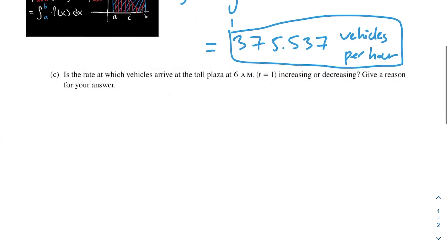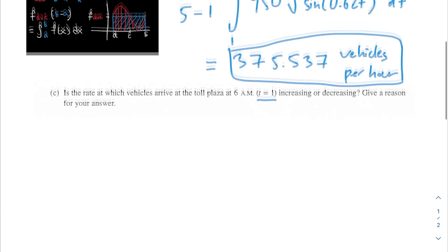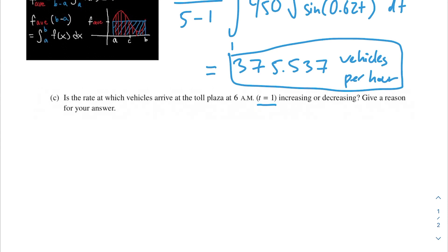Next question: Is the rate at which vehicles arrive at the toll plaza at 6 a.m. (t equals 1) increasing or decreasing? Give a reason for your answer. Now we're actually looking at the rate of the rate, so we're actually going to be finding the derivative of our rate. We want to determine whether the rate at which vehicles arrive at this certain time is increasing or decreasing. That should signal to you, we're taking another derivative. We're going to want to find the derivative of A(t) at 1.